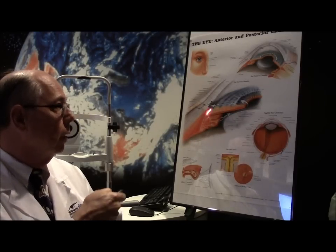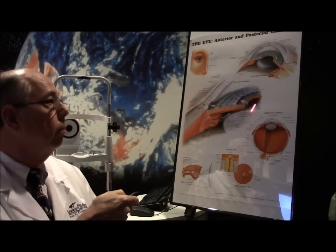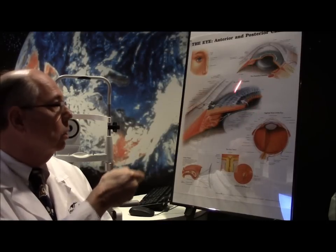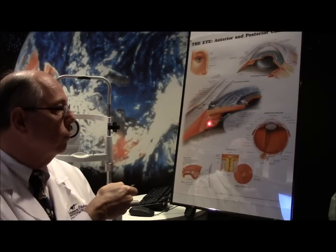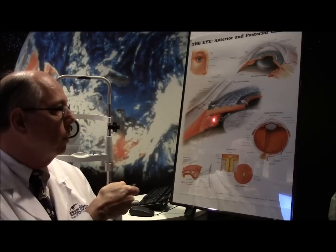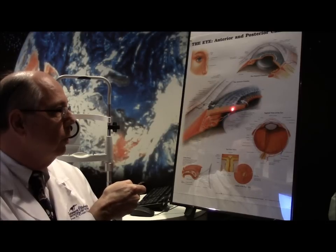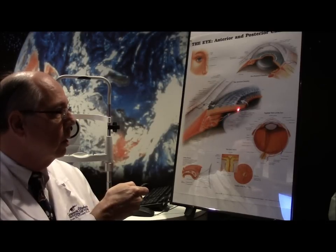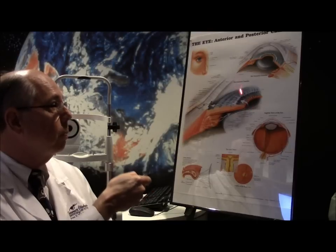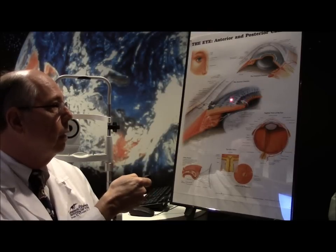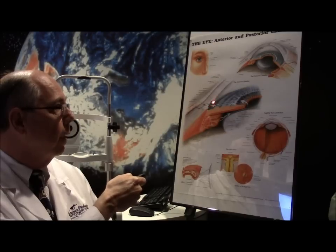So if we look here at the eye, behind your pupil sits this little gland that produces fluid in your eye. This fluid then goes forward between your iris and your lens, goes through the pupil, fills up the front of your eye.